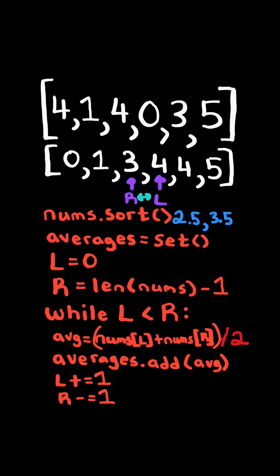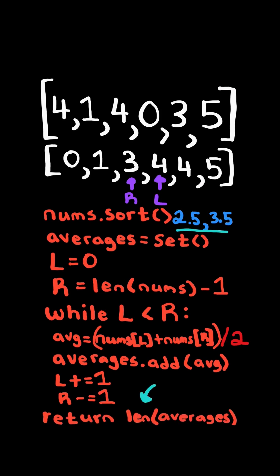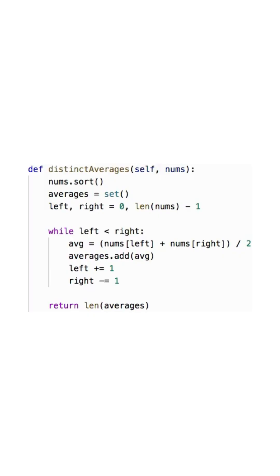Eventually, L and R will cross. At that point, we have all the unique averages in our set, and so we return the length of the set. And here's the code to do so.